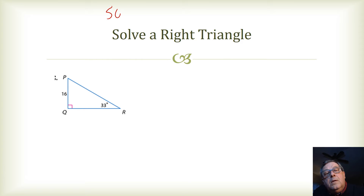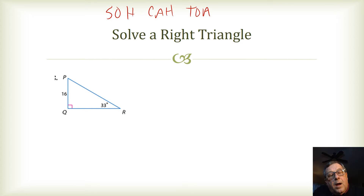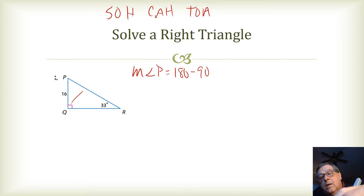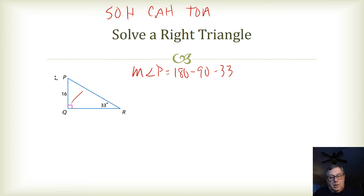For the third triangle, we're doing SOHCAHTOA again. The hypotenuse is unknown. Angle R is 33° and the side opposite angle 33° is 16. Since I know two angle measures — 90° and 33° — I'll first find the measure of angle P: 180 minus 90 minus 33 equals 57. So the measure of angle P is 57°.